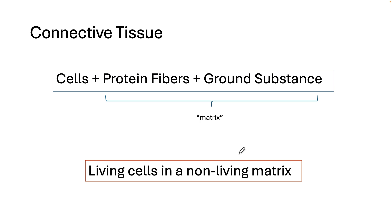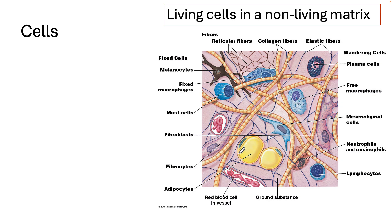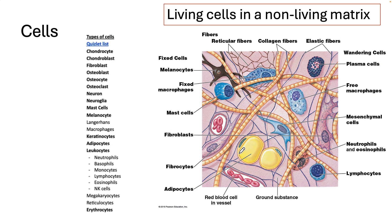The cells you find in connective tissue are pretty spread out. You might recognize the names of some of the cells on this picture — they are also on your vocab list for Unit 2. For many connective tissue cells, their job is either to secrete the protein fibers that create the matrix or to maintain that matrix.